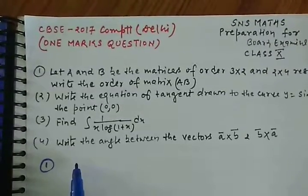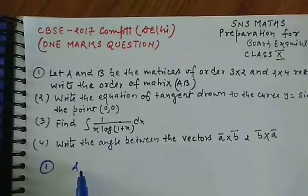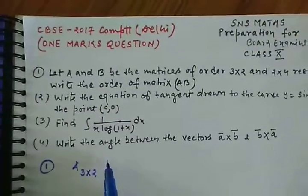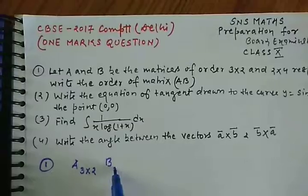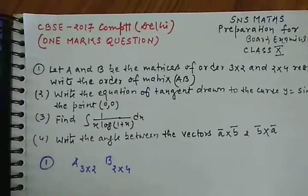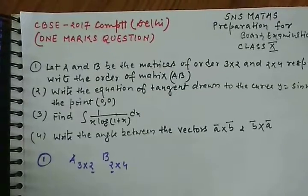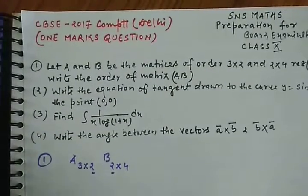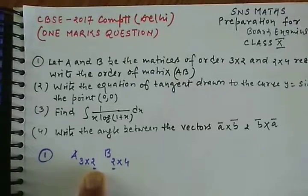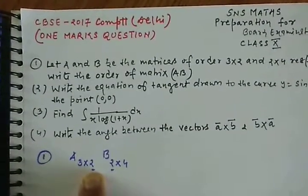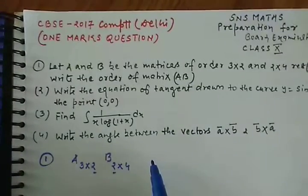3 into 2. The order of B is 2 into 4. If middle numbers are equal, then we say product is possible. If the number is not equal, then matrix multiplication will not be possible. So if the matrix multiplication is possible and the order of AB,